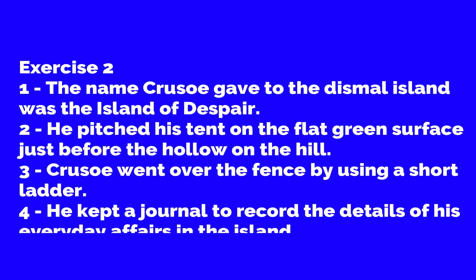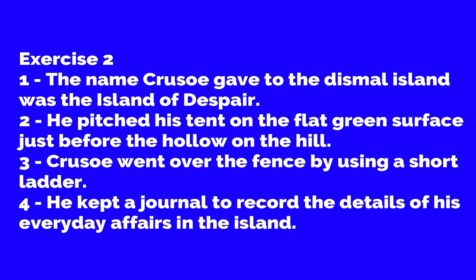Exercise two: Answer the following questions within fifteen words. One: What name did Crusoe give to the dismal island? Answer: The name Crusoe gave to the dismal island was the Island of Despair. Second: Where did he pitch the tent? Answer: He pitched his tent on the flat green surface just before the hollow on the hill.